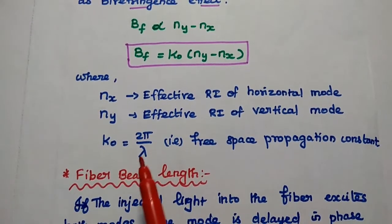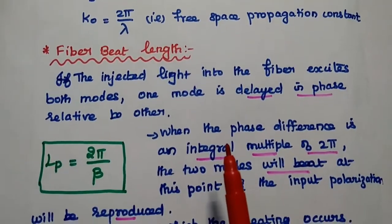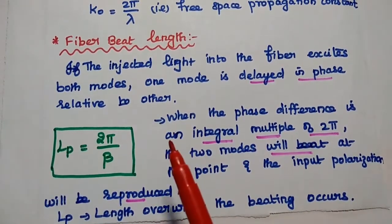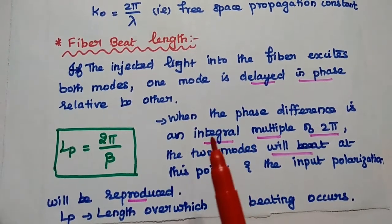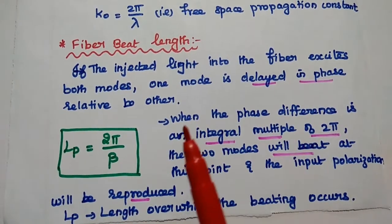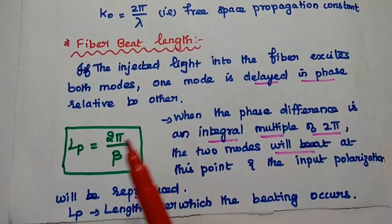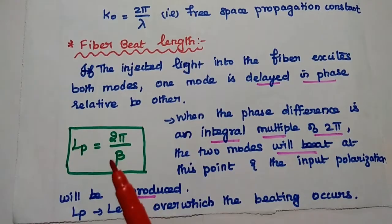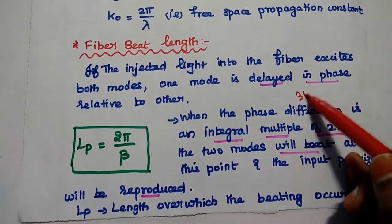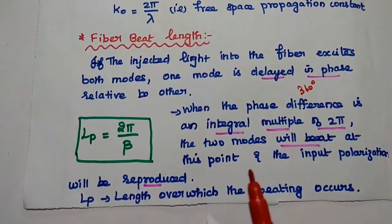k₀ is the free space propagation constant equal to 2π/λ. The next one is fiber beat length. When light is injected into the single mode fiber, it excites both modes with some delay in phase relative to the other. If one mode is delayed in phase relative to the other, when the phase difference is an integral multiple of 2π, the two modes will beat at one point. Every 360 degrees, it will beat at this point and the input polarization is reproduced. This is called as fiber beat length.